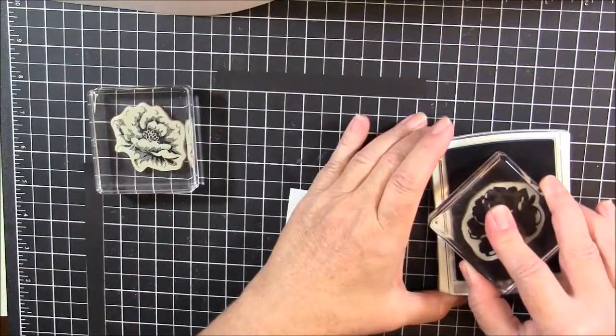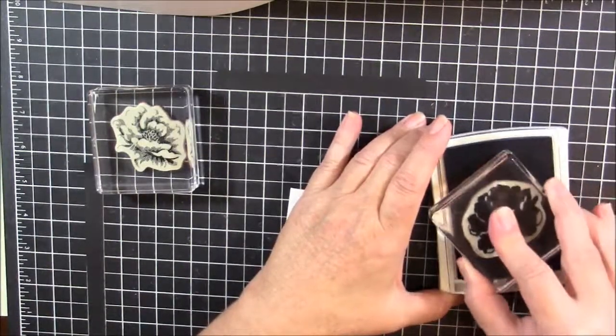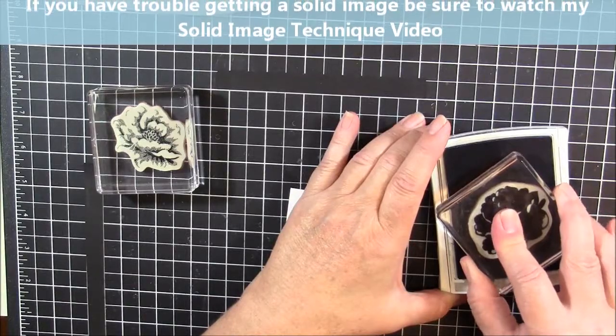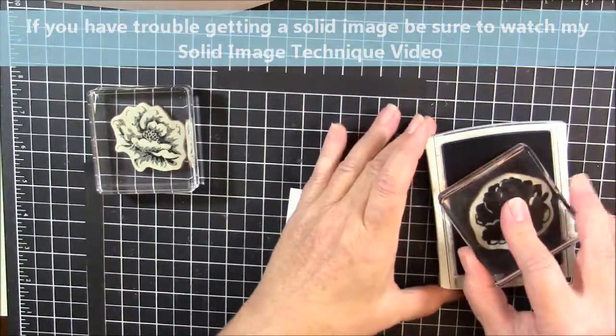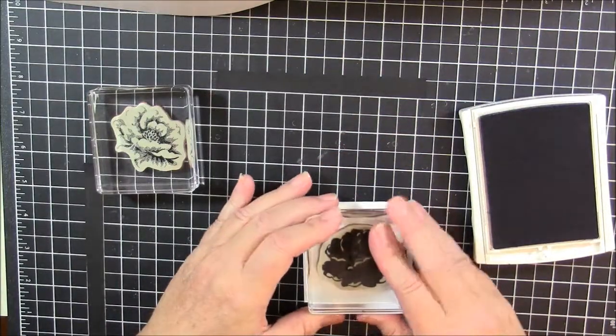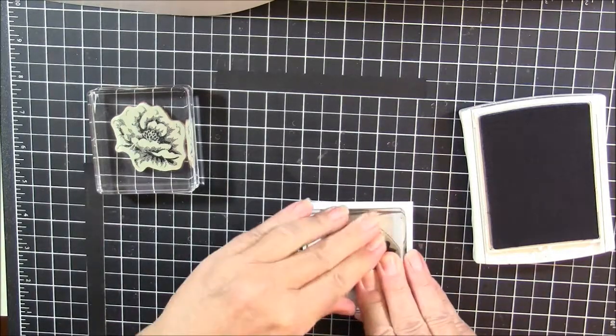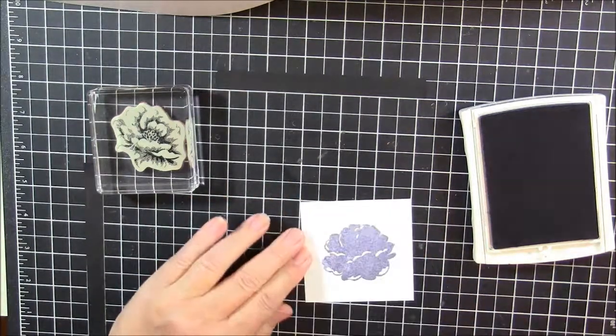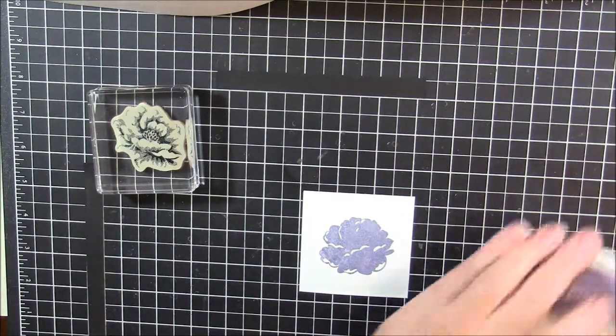Now you want to make sure you tap, tap, tap and get a solid coverage. Remember that the more solid your stamp, the more tapping you need to do. We're going to place that on our card stock and press evenly to get that even image. There we go. I'm using Wisteria Wonder for my base color.